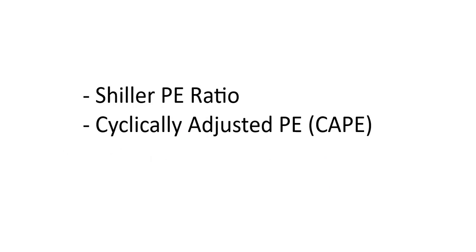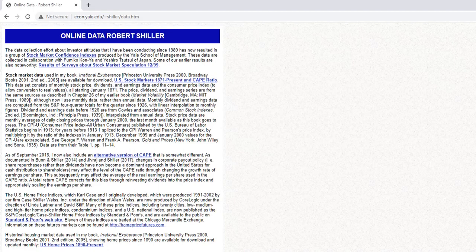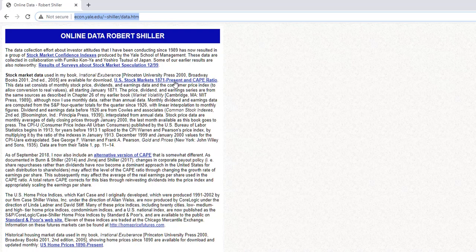The Schiller PE ratio is also known as the cyclically adjusted PE, the CAPE ratio, or simply the PE 10. Since it's a 10-year average, it smooths out a lot of the short-term extremes in earnings or prices. The methodology can be applied to any stock market index if you have the index data and an inflation reference. You can download Robert Schiller's work in Excel form from his website — data from 1871 to present, updated every month.